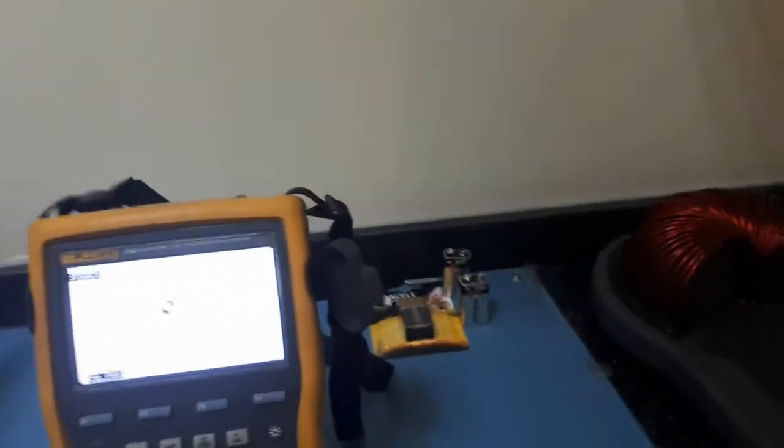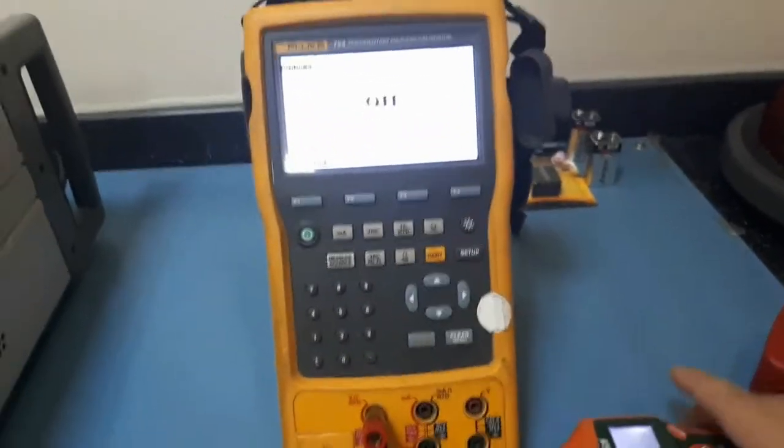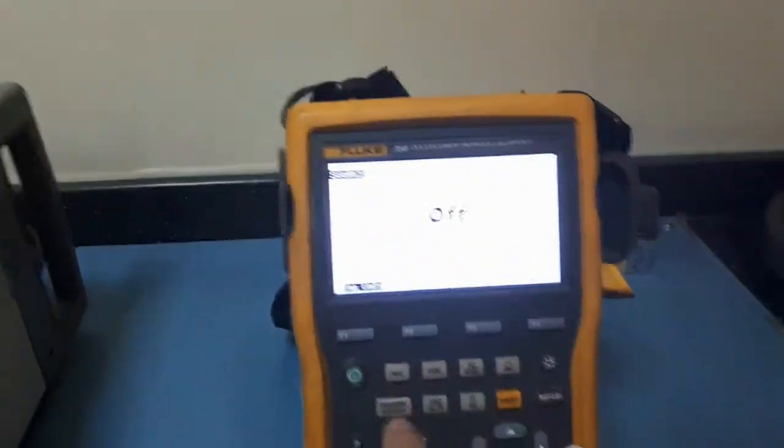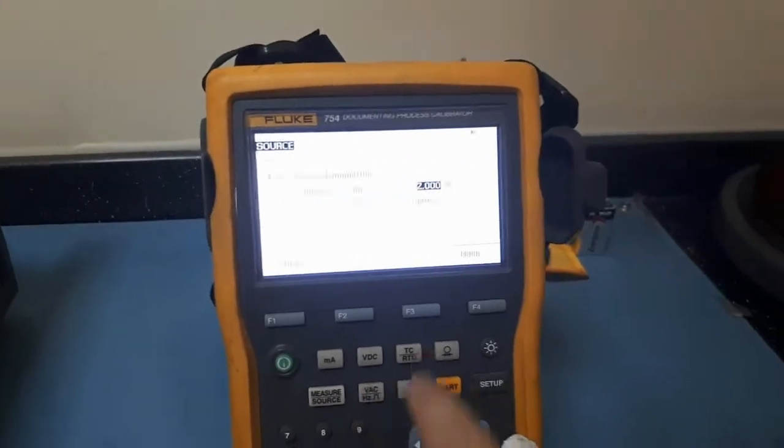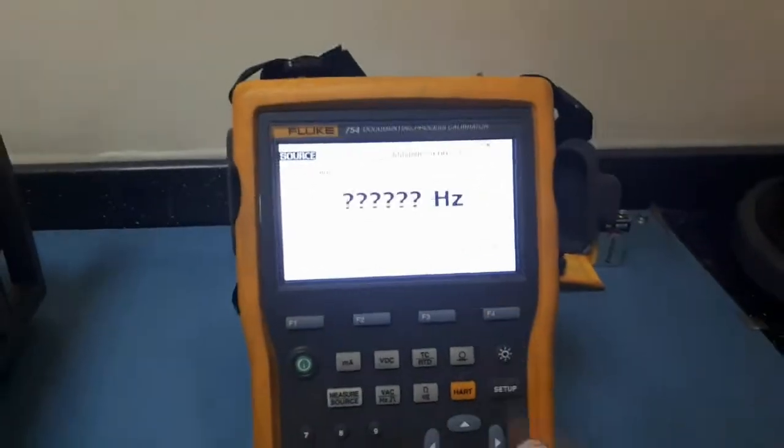This is a non-contact using laser. We will verify using this. These are the settings. Put in the source. We will choose a voltage. This one already 2 volts and a square wave. Done.